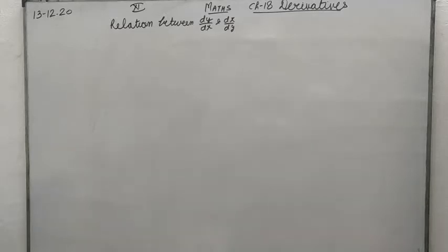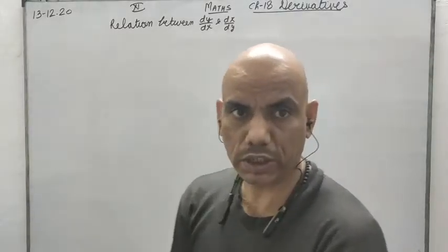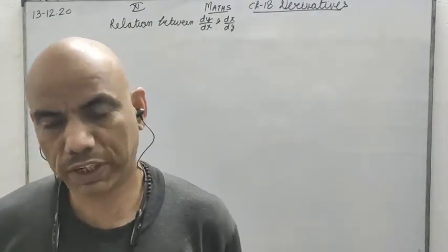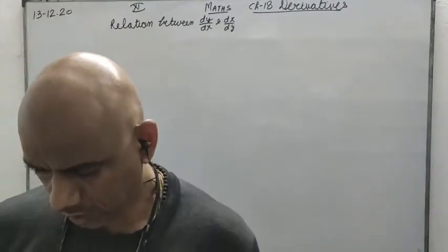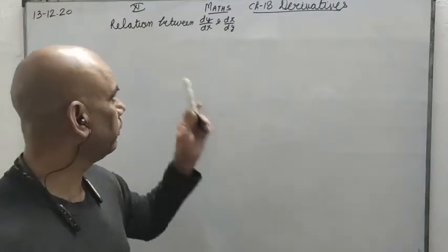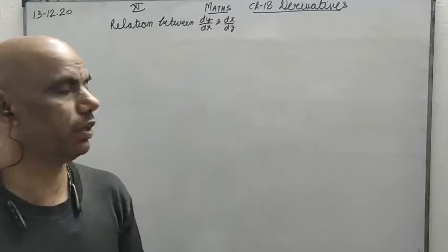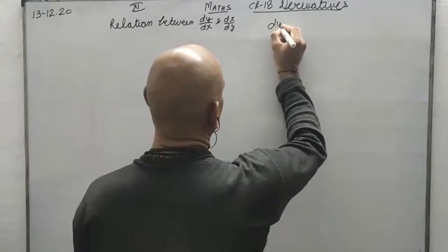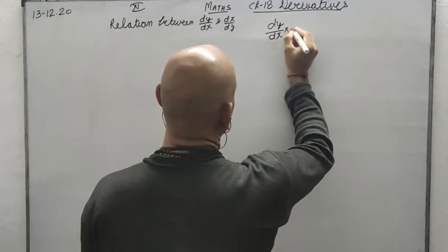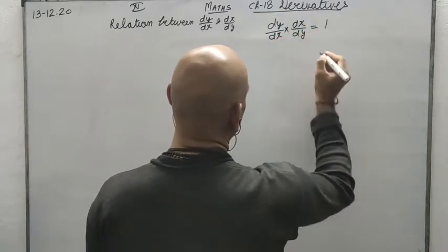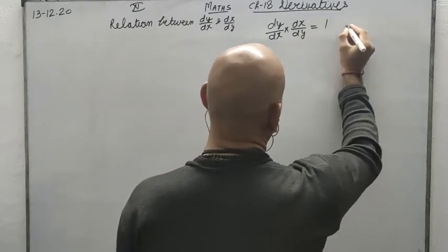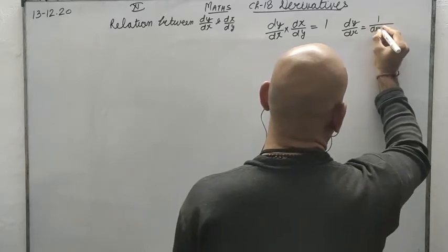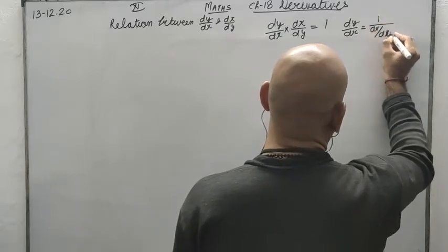Hello my dear students, once again I am here. This time we are going to solve chapter number 18, that is derivatives. We have already started this chapter and today in that series we are going to study the relation between dy by dx and dx by dy. As you know, dy by dx into dx by dy will be equal to 1, so dy by dx will always be the reciprocal of dx by dy.